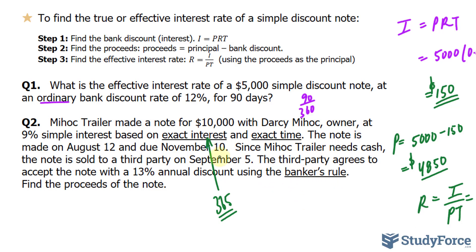There's a lot going on here. Exact interest, exact time, and bankers rule are all key terms. The exact time between August 12 and November 10 is exactly 90 days. Exact interest is based on 365 days in a year, as opposed to ordinary interest, which uses 360 days. The bankers rule is when you calculate interest on a loan based on ordinary interest, which yields a slightly higher amount. Using 360 instead of 365 gives more interest — that's why it's called the bankers rule, that's how they make their money.